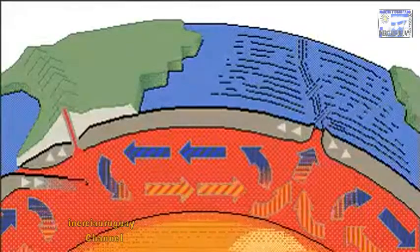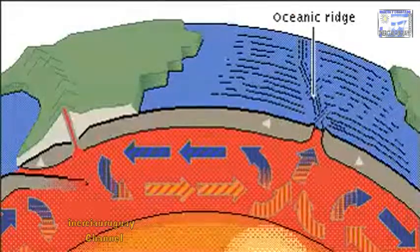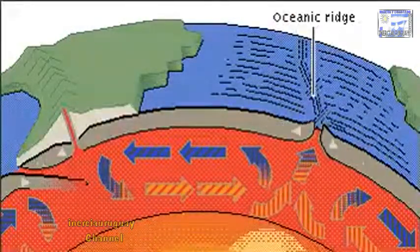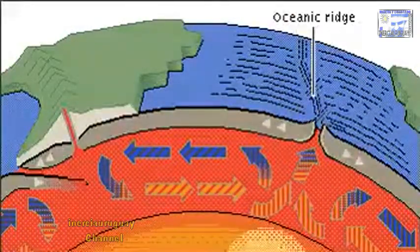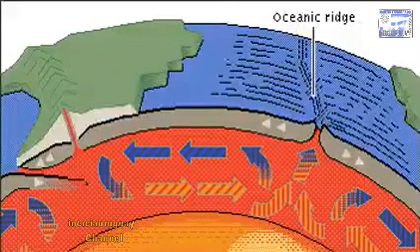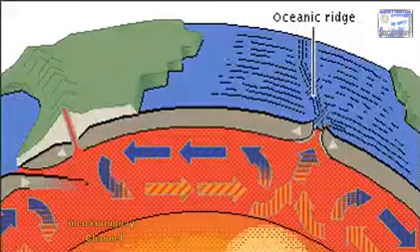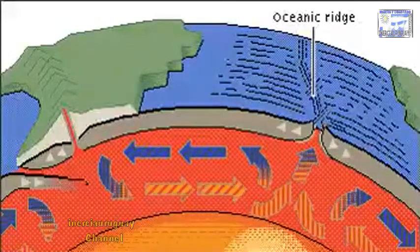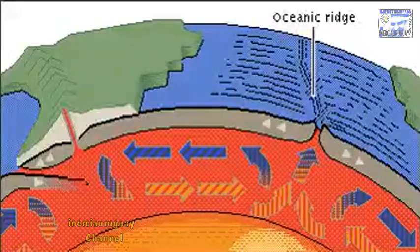If the heating occurs beneath an ocean, the Earth's crust is lifted up and forms an oceanic ridge. The ocean widens as new seafloor is produced.